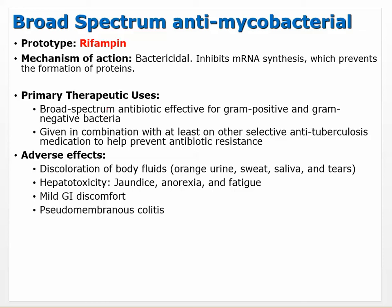The primary therapeutic uses of rifampin: it's a broad-spectrum antibiotic effective for gram-positive and gram-negative bacteria, and also in this case mycobacteria. It's given in combination with at least one other selective anti-TB medication to help prevent antibiotic resistance — it helps kill those bacteria faster and doesn't give them a chance.